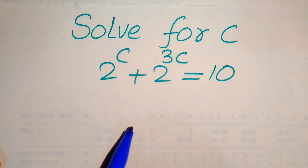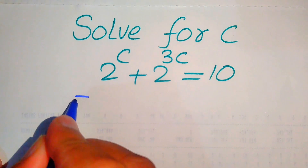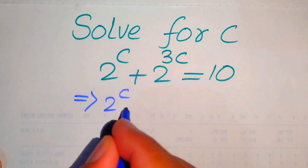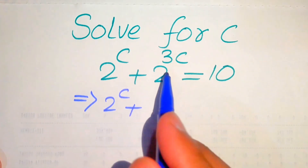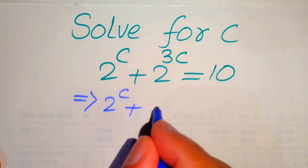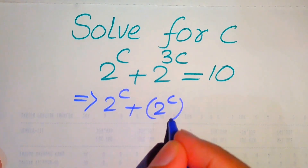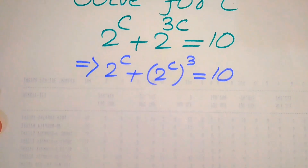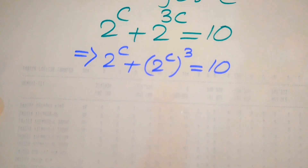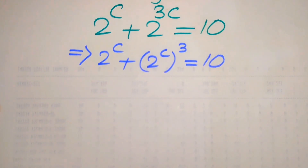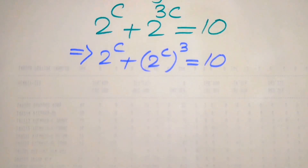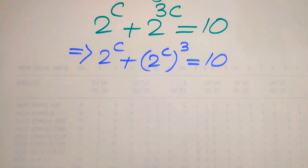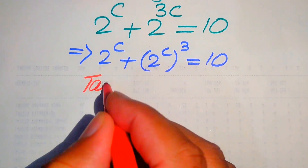Here first we convert this exponential equation into the cubic equation form. For this, we rewrite this equation as 2 to the power of c plus — here we use the exponent law and move this c inside the term — it will be written as 2 to the power of c, whole cubed, and this equals 10. In the next step, this equation will become an exponential equation with the exponential term 2^c.